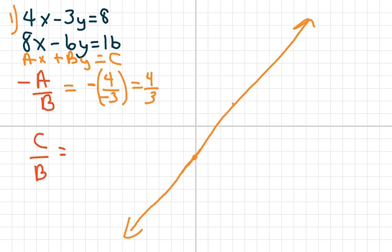Now, if we do the same thing with equation two, we have the same slope, because basically what you get is negative 8 over negative 6, and that reduces to 4/3 as well. So it has the same slope.